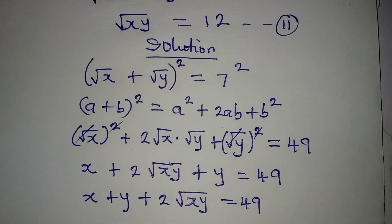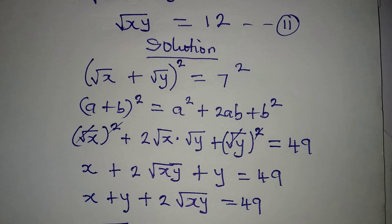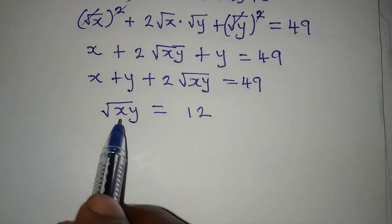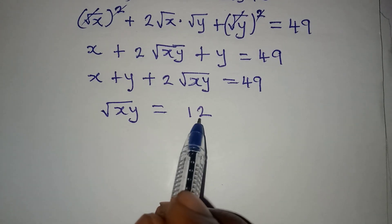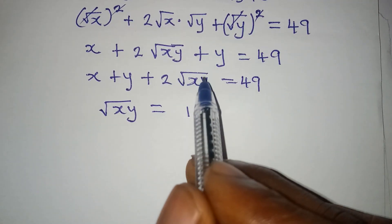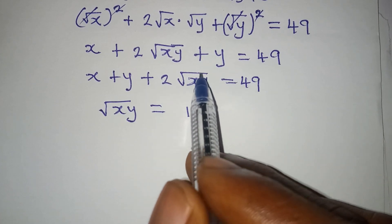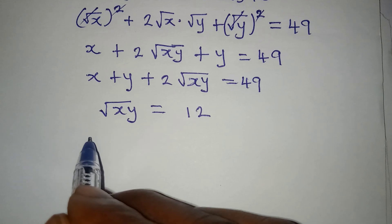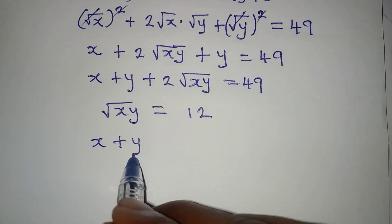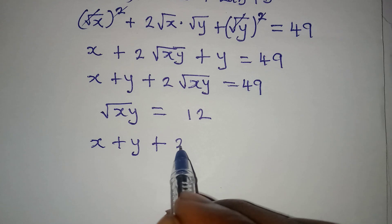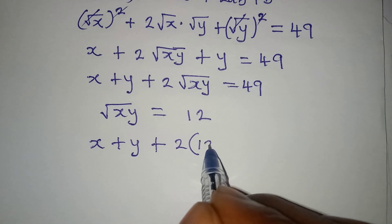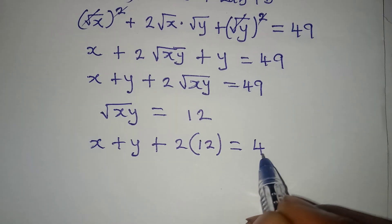Now let's look at equation 2, where we have square root of xy equal to 12. Since I have square root of xy in my expression, I'm going to replace it with 12. So x plus y plus 2 times 12 equals 49.